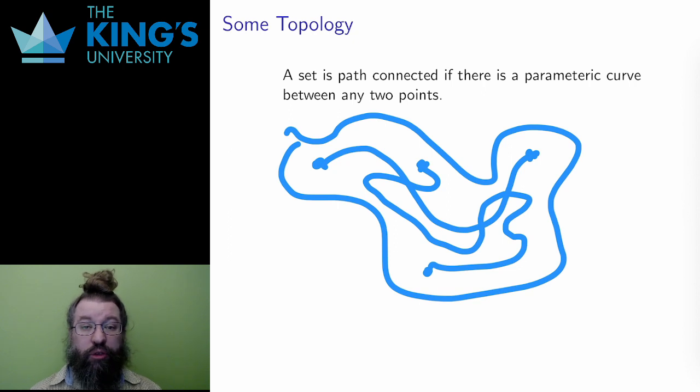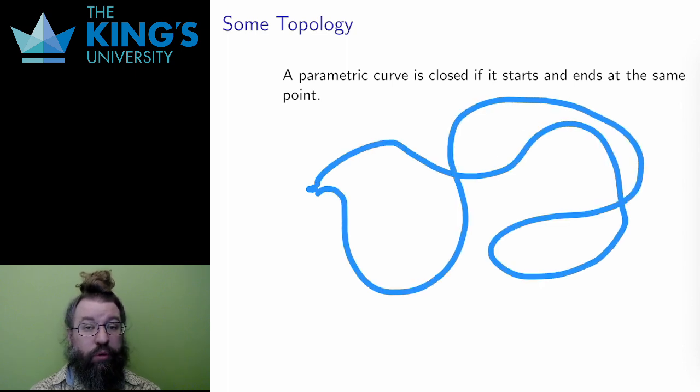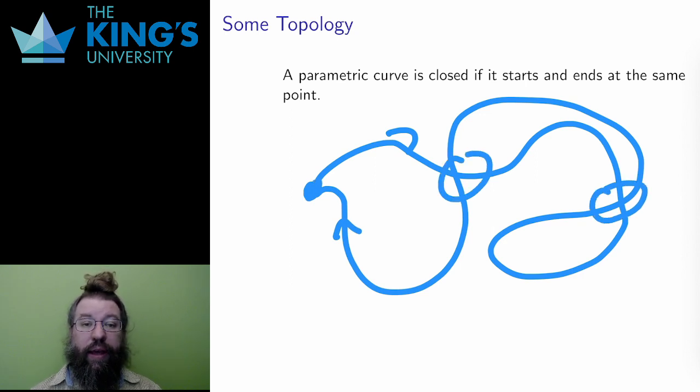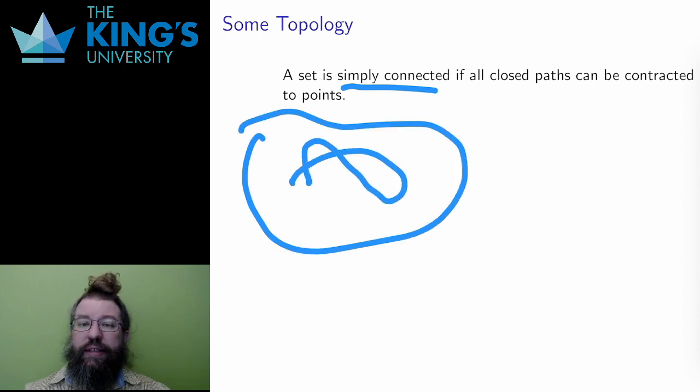However, I need a slightly stronger notion. I want a set to be connected and not have any holes in it. This is also the domain of topology, so here are a couple more definitions. A parametric curve is called closed if it starts and ends at the same point, if it is a loop. It can have other self-intersections, it does not need to be a simple loop, but it must end up where it started. This gives me a technical version of the idea of not having any holes in a set. A set is called simply connected if all paths in the set can be contracted to points.